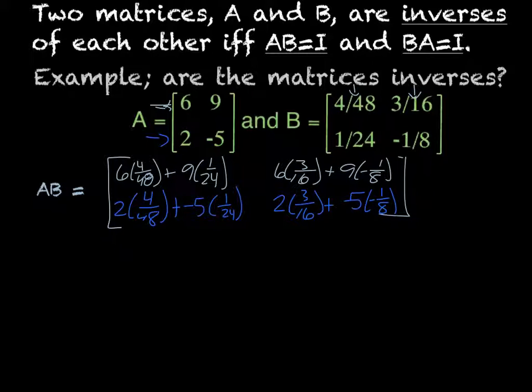All right, and then when we do our simplification here, we would get 1 half plus 3 eighths. We would get 9 eighths minus 9 eighths.